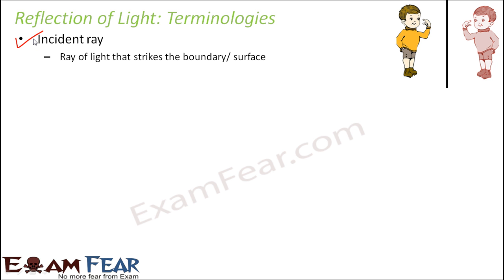The first term is the incident ray. It is that ray of light which strikes the surface. Please get used to the two terms: object and image. Whatever you see in the mirror is the image, and you yourself are the object. So this boy is the object and this is his image in the mirror. The ray of light which falls on the mirror is the incident ray — the word 'incident' means something which is falling on a surface.